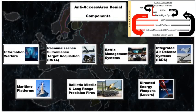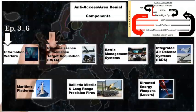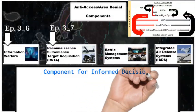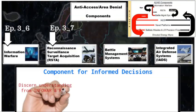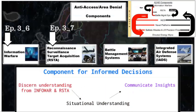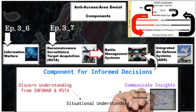Anti-access area denial. A year ago, we started our journey to define it and understand its components. In our last episodes of InfoWar and RISTA, we saw that deep sensing and influence are critical to an effective A2AD strategy. Today, we talk about the essential component that allows leaders to make informed decisions — situational understanding — along with the methodology to both discern understanding and communicate insights, that is, battle management systems. Join us on forming the common operational picture. I am your host, and this is 35 Fox Talks.